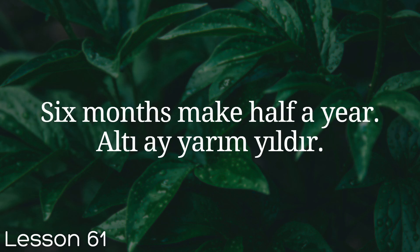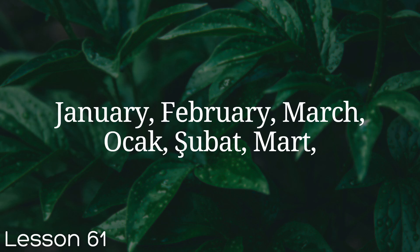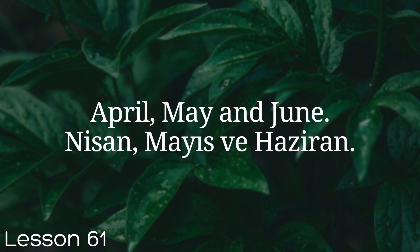Six months make half a year. Altı ay yarım yıldır. January, February, March — Ocak, Şubat, Mart. April, May and June — Nisan, Mayıs ve Haziran.